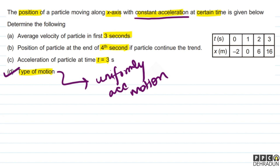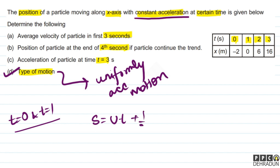Now, the table gives us information about where the particle was at t=0, t=1, t=2, and t=3. If we take any two instants — say t=0 and t=1 — we can use the equation s = ut + ½at².